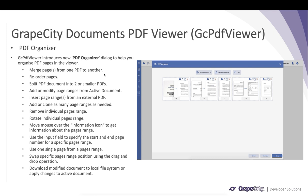These are the various operations you can perform with respect to pages: you can merge pages from one PDF to another, reorder pages, split a PDF document into two or smaller PDFs, add or modify page ranges from the active document, insert a page range from an external PDF, and add or clone as many page ranges as needed.